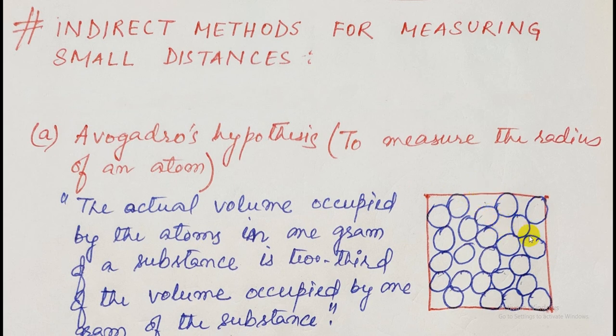The total volume occupied by the substance and the actual volume occupied by the atoms of the substance are different. The total volume occupied is more, but the actual volume is less.